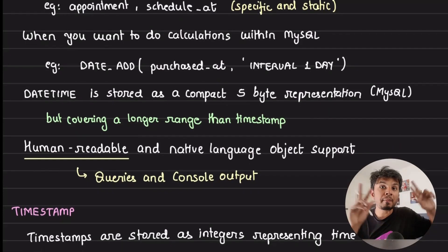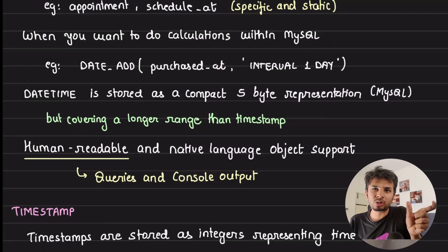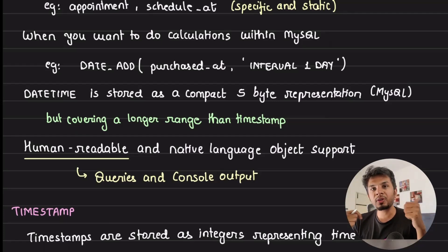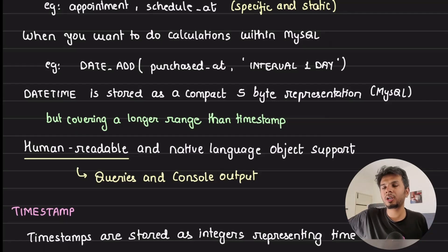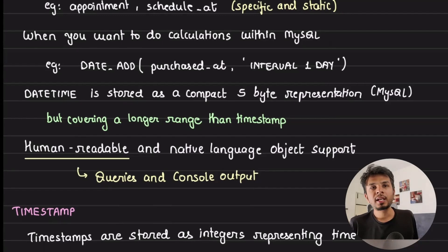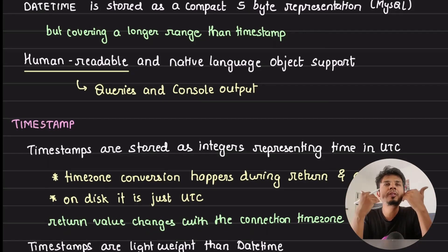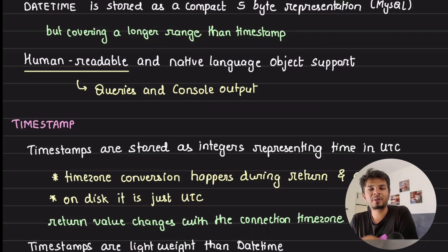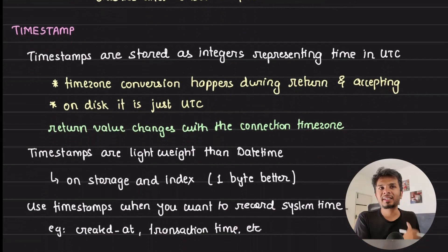Datetime covers a massive range from year 1000 to 9999. Just one extra byte over timestamp gives you this enormous range far beyond 2038. Additionally, datetime objects are human-readable — when you fire a SELECT query in your MySQL console you can directly interpret the year, month, and date. With timestamp you just see an integer representing seconds elapsed, which you cannot easily interpret at a glance.